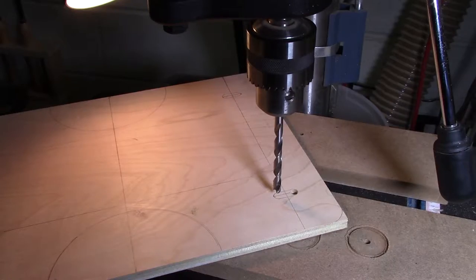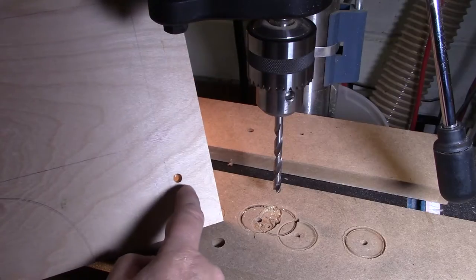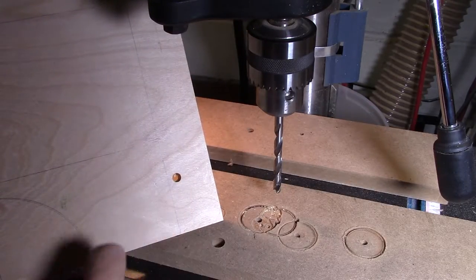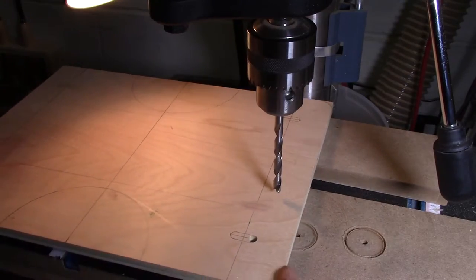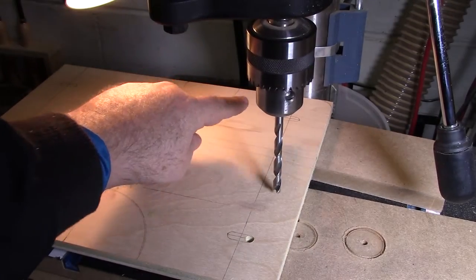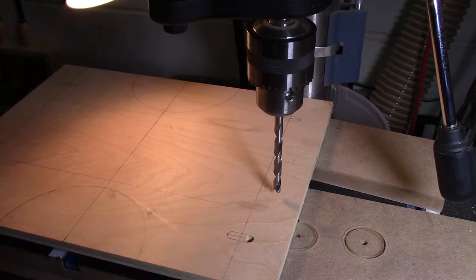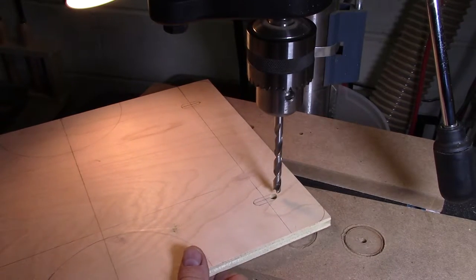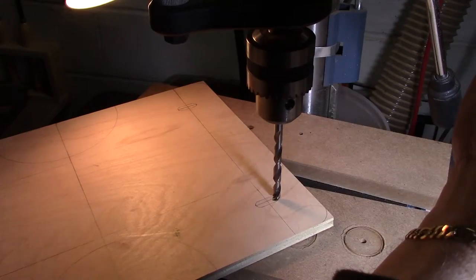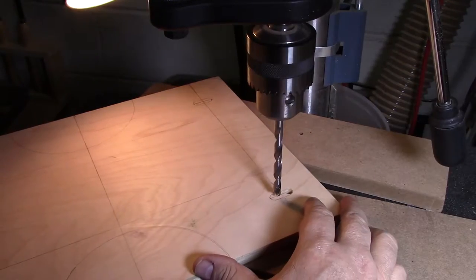So I'm here at my drill press to drill these holes for the slots I'm going to make for the T-bolts. Put it in here and I can't get all the way back because I'm bumping into the post of the drill press back there. So what I have to do is angle this in here and drill it from this way. So I'll get the other end of this hole.